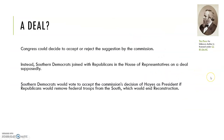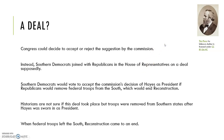Congress could decide to accept or reject the commission's suggestion. Supposedly, Southern Democrats joined with Republicans in the House on a deal: Southern Democrats would vote to accept Hayes as president if Republicans would remove federal troops from the South, which would end Reconstruction. Historians are still not sure if this deal took place, but troops were removed from Southern states after Hayes was sworn in. When federal troops left the South, Reconstruction came to an end.